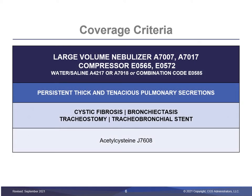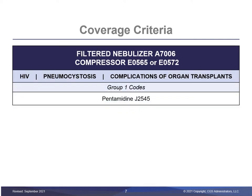A large volume nebulizer and compressor, including supplies, may be covered when utilized to administer acetylcysteine for persistent thick and tenacious pulmonary secretions due to cystic fibrosis, bronchiectasis, tracheostomy, or a tracheobronchial stent. A filtered nebulizer and compressor may be covered for HIV, pneumocystosis, and complications of organ transplant when pentamidine is prescribed to treat those conditions.